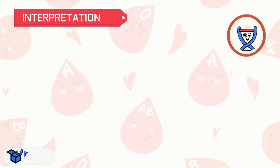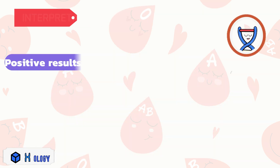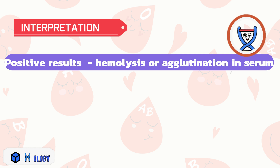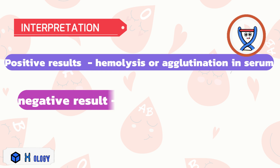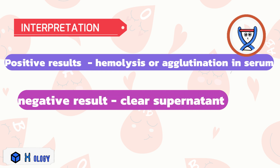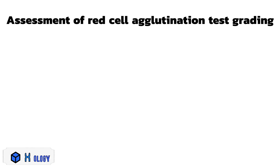Positive results in forward grouping and reverse grouping are indicated by agglutination of tested red cells and either hemolysis or agglutination in serum, respectively. A negative result is observed when there is a clear supernatant after resuspension in the red cell agglutination test.